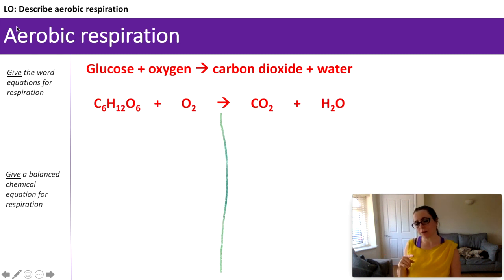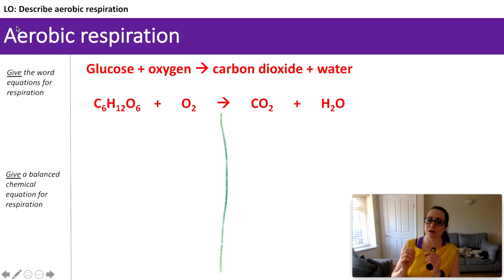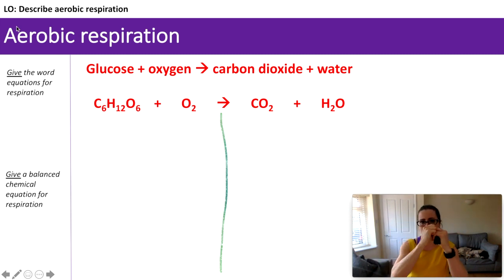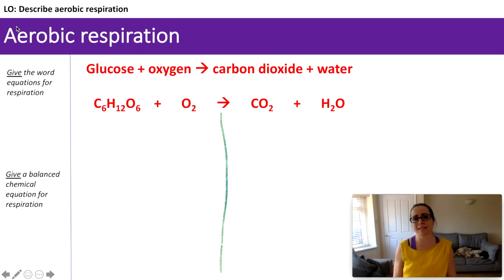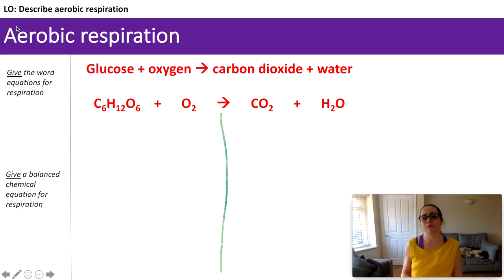Oxygen is a diatomic molecule — it travels around in a pair, not just one oxygen alone. Di meaning two, atomic meaning atoms — two atoms together. Carbon dioxide is CO2 and water is H2O. These are all our very familiar chemical formulas for these substances.